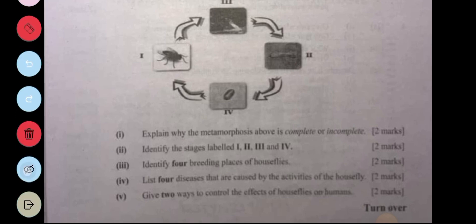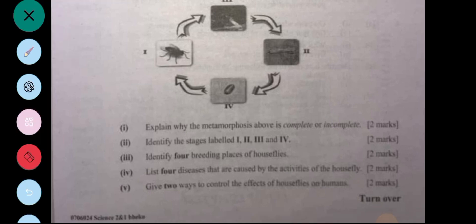The next question: Identify four breeding places of houseflies. Breeding places include garbage dumps, animal feces, decaying organic matter, and compost piles.